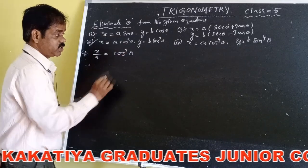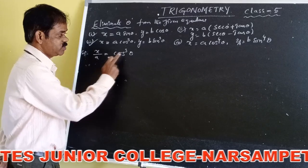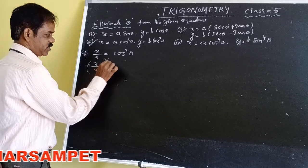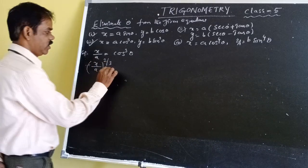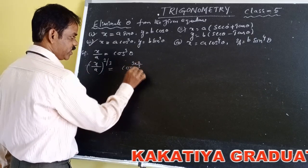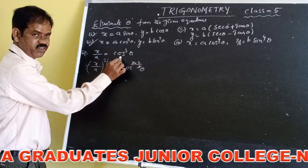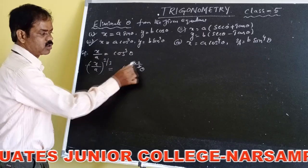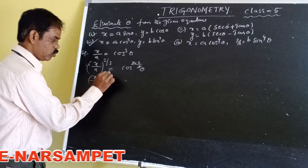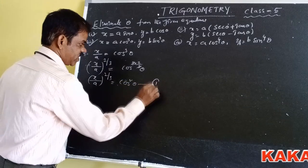Therefore (x/a)^(2/3) = cos²θ. Let us consider this as equation number 1. The second given equation is y = b·sin³θ. Taking b to the other side, y/b = sin³θ. Applying the same concept, raising both sides to the power 2/3: (y/b)^(2/3) = sin²θ. Let us consider this as equation number 2.